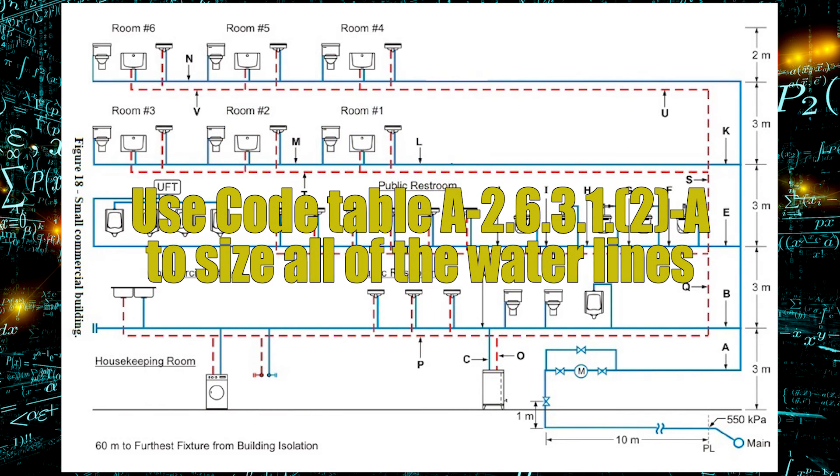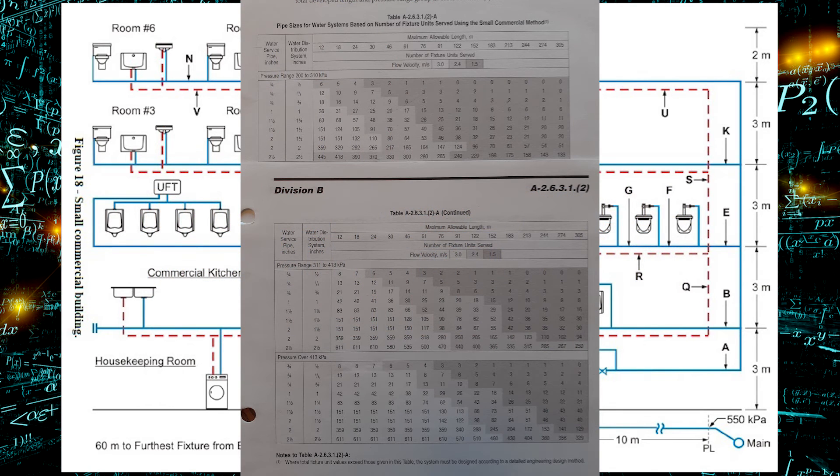Now we need to turn in your plumbing code way near the back to Section A-2.6.3.1.2 and you're going to find three tables. We should be looking at table A-2.6.3.1.2-A.